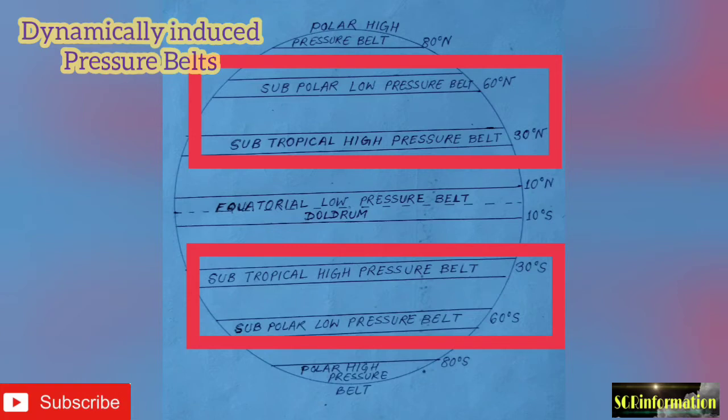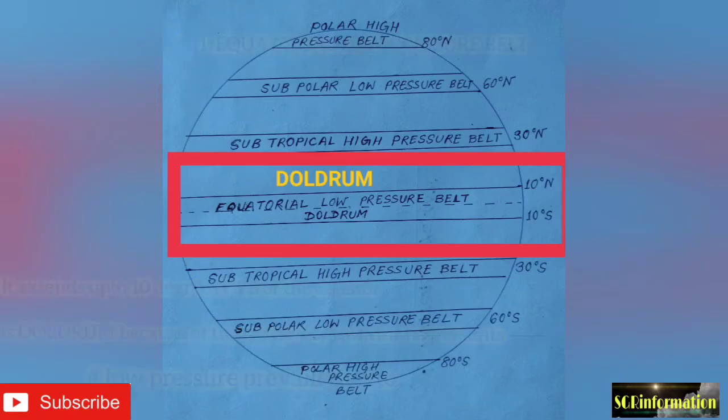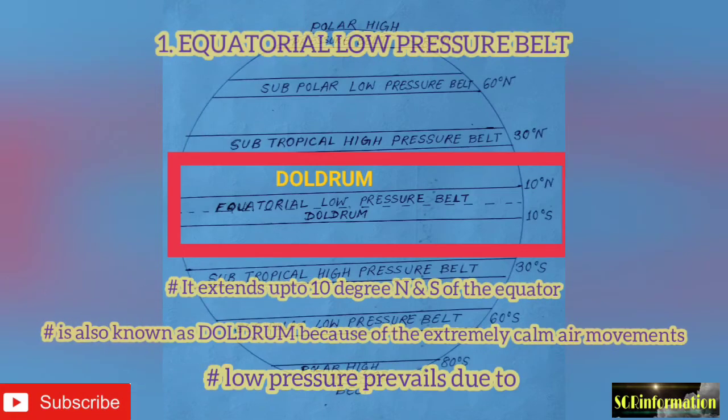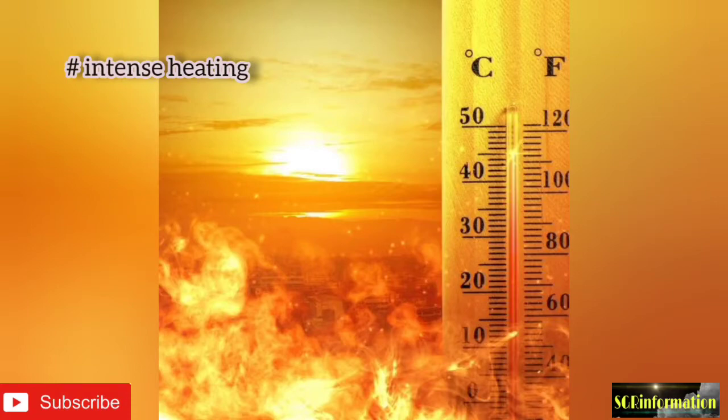Number one: equatorial low pressure belt. It extends up to 10 degrees north and south of the equator. It is also known as the doldrums because of extremely calm air movements. Low pressure prevails due to intense heating — air gets warm and rises over the equatorial region, producing the equatorial low pressure belt.